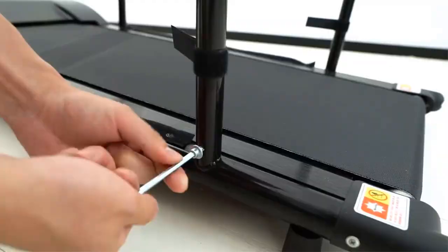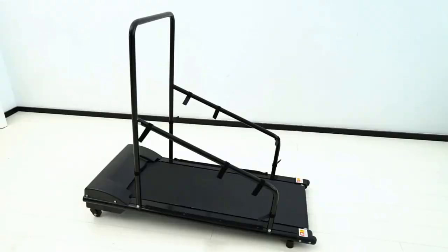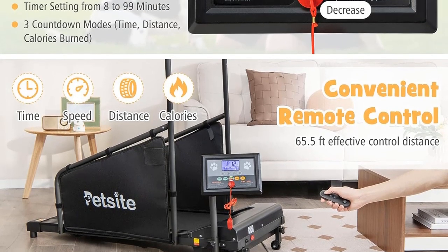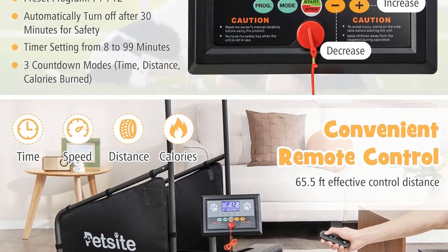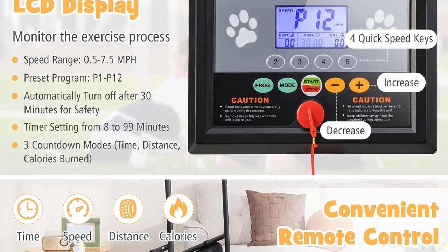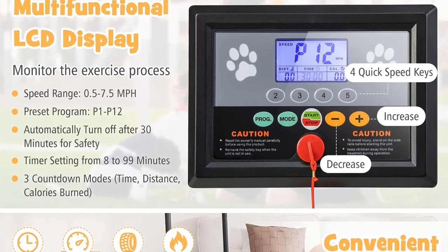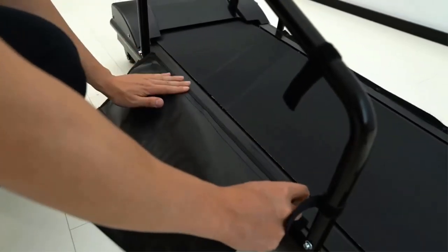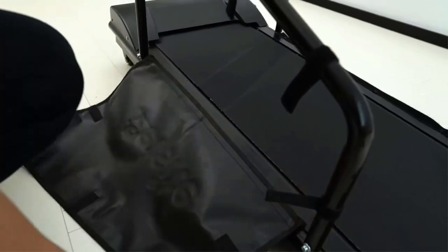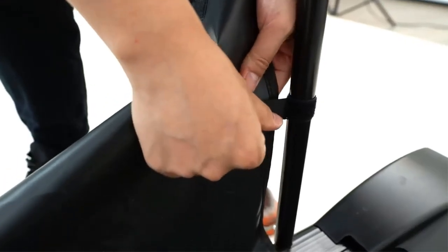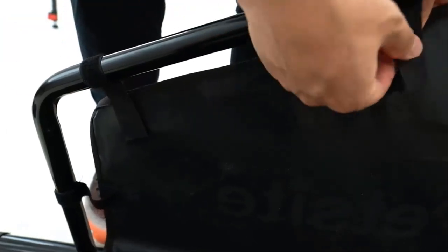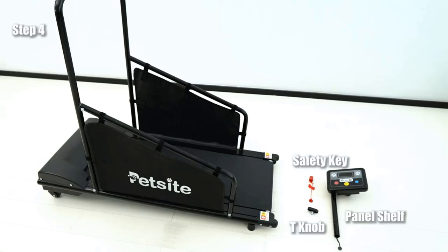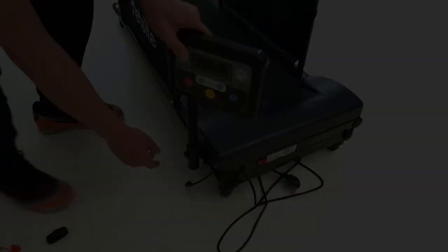One of the standout features of this dog treadmill is its ability to customize workout programs. Equipped with a robust 1.5 horsepower motor, it can facilitate running speeds ranging from 0.5 to 7.5 miles per hour, all while maintaining low noise levels. With 12 preset programs and 3 countdown modes, you have a variety of exercise options to suit your dog's needs and fitness level. Additionally, the treadmill offers 3 levels of incline adjustment, allowing you to create a more scientific and efficient exercise regimen tailored to your pet's requirements.